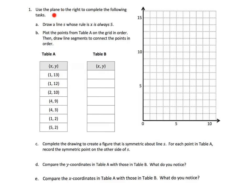The directions say to follow all these steps. First, draw a line S whose rule is X is always 5. So what is the line going to look like if X is always 5? That line is going to look like this, right where the X value is always a 5. So there is step A.